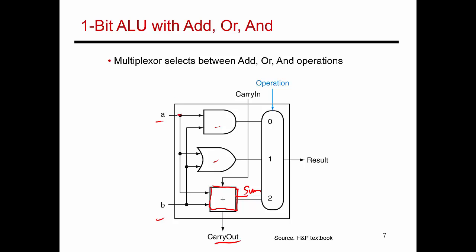The black circles show that intersecting lines are actually connected, whereas intersecting lines without a black dot are not connected. So the value A is being sent to the AND gate, also being sent to the OR gate, and also being sent to the one-bit adder. What comes out of the AND gate is A dot B, what comes out of the OR gate is A or B, and what comes out of the adder is the sum of A and B. The carry-out from that addition is sent to the next stage.